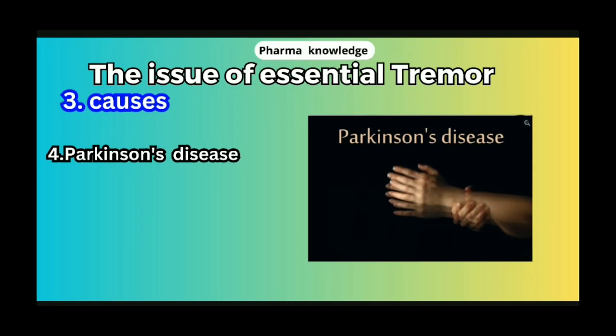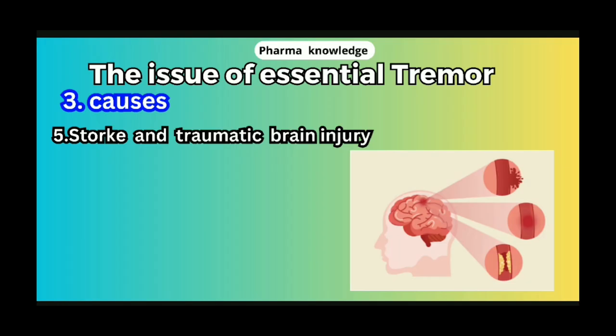The fourth cause is Parkinson's Disease — Parkinson's is a neurological disease associated with tremors. The fifth cause is Stroke and Traumatic Brain Injury. If you have a stroke or brain injury, it can cause tremors.